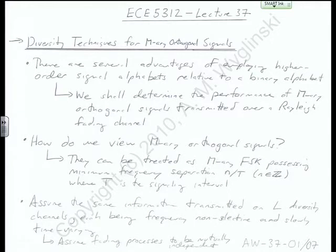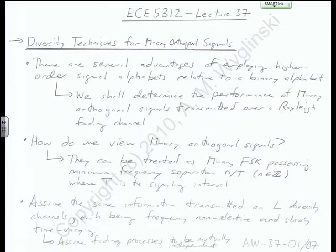We're going to look at an M-ary signal constellation — an M-ary modulation scheme — go through the mathematics, and then bring it back to a binary version to see how it degenerates into something simple. In particular, we're going to look at the performance of M-ary orthogonal signals transmitted in a Rayleigh fading channel. What's nice about Rayleigh fading is that we know mathematically what that's going to look like.